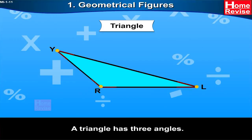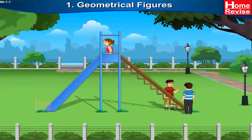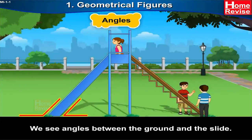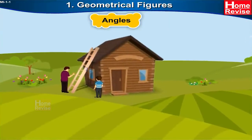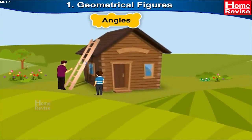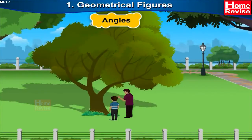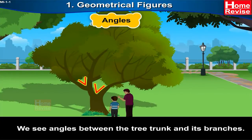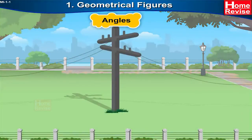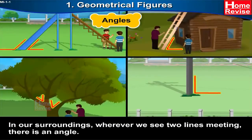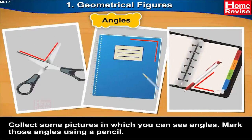Can you notice the angle in a slide? If you see it properly, we can see angles between the ground and the slide. A ladder also makes an angle with the ground. We see angles between a tree trunk and its branches. There is also an angle between an electric pole and the ground. In our surroundings, wherever we see two lines meeting, there is an angle. Collect some pictures in which you can see angles and mark those angles using a pencil.